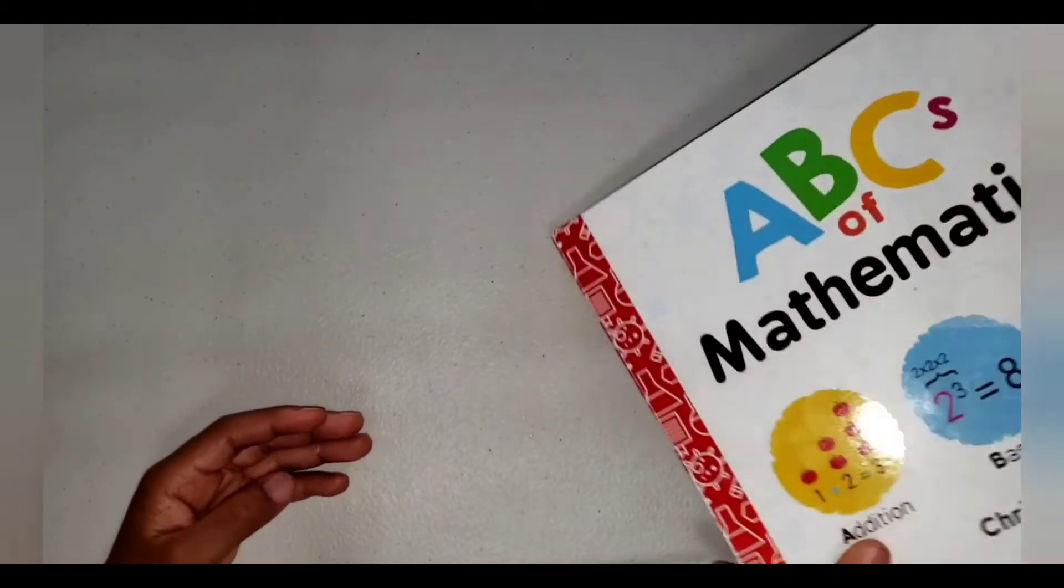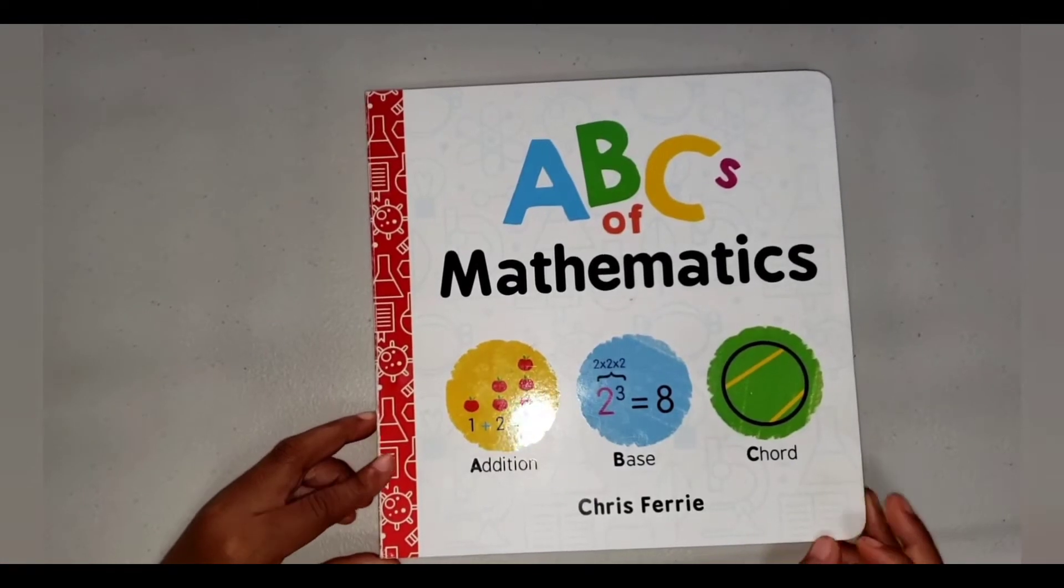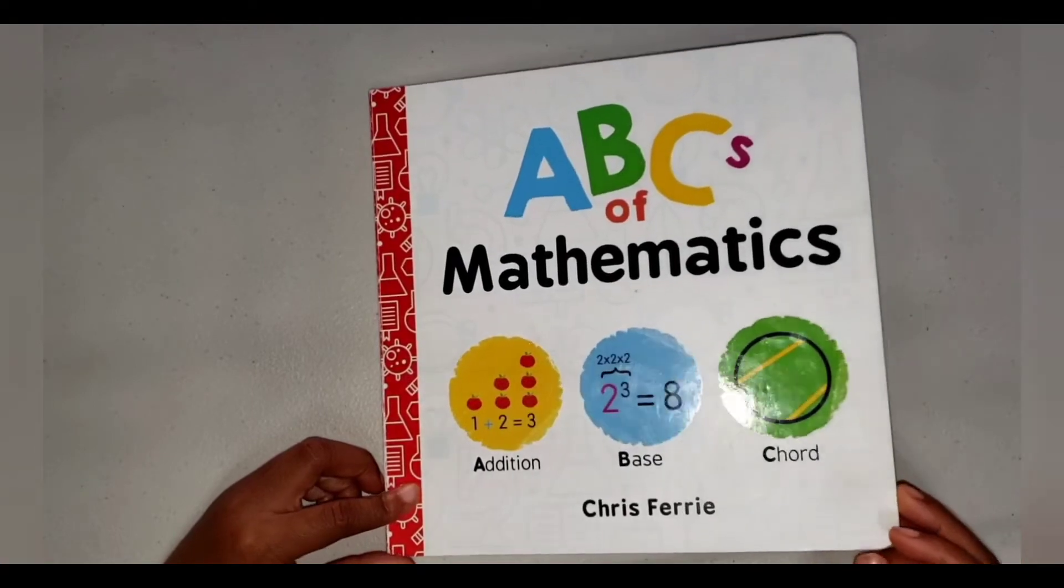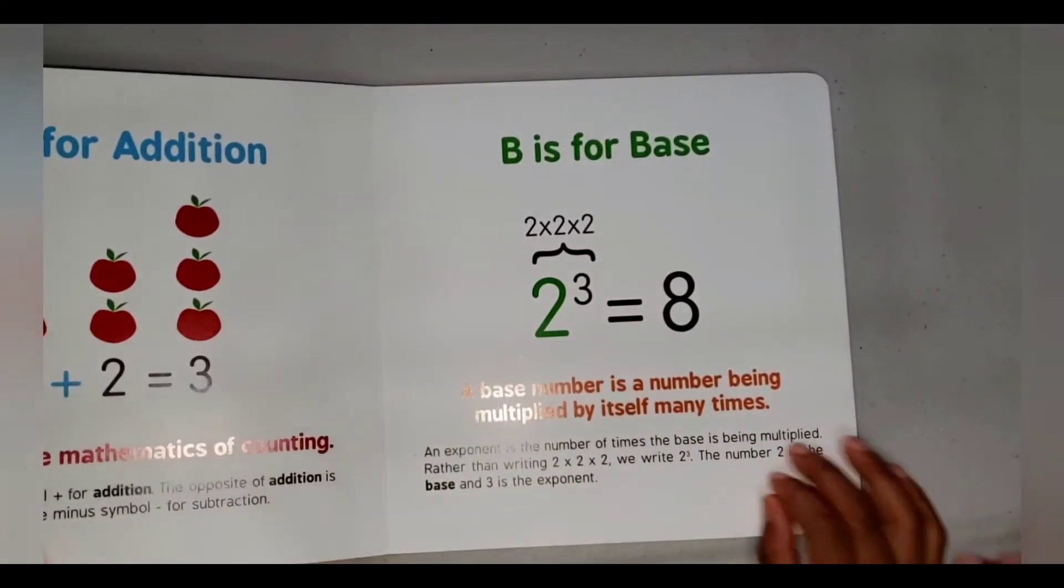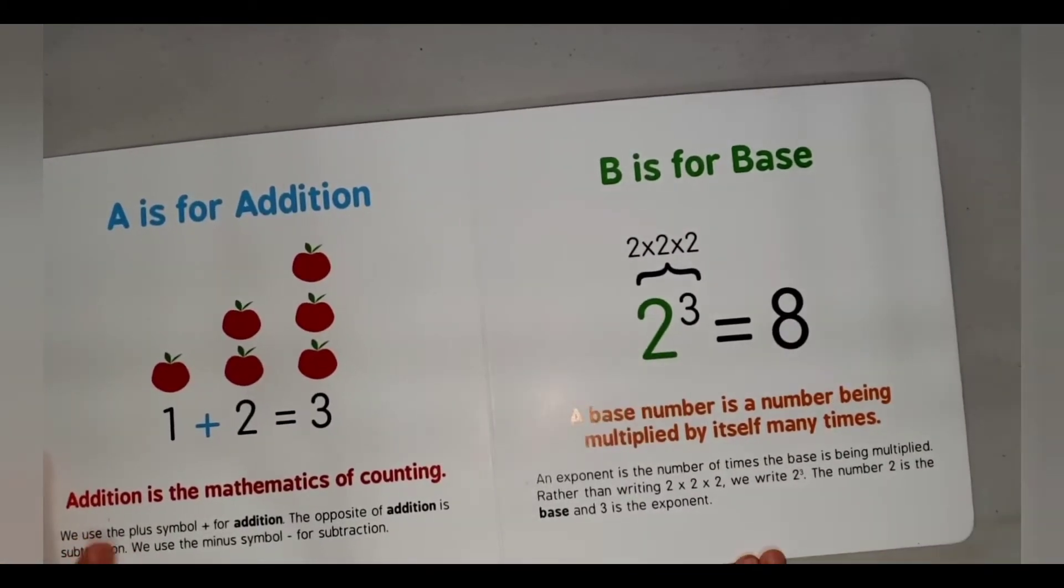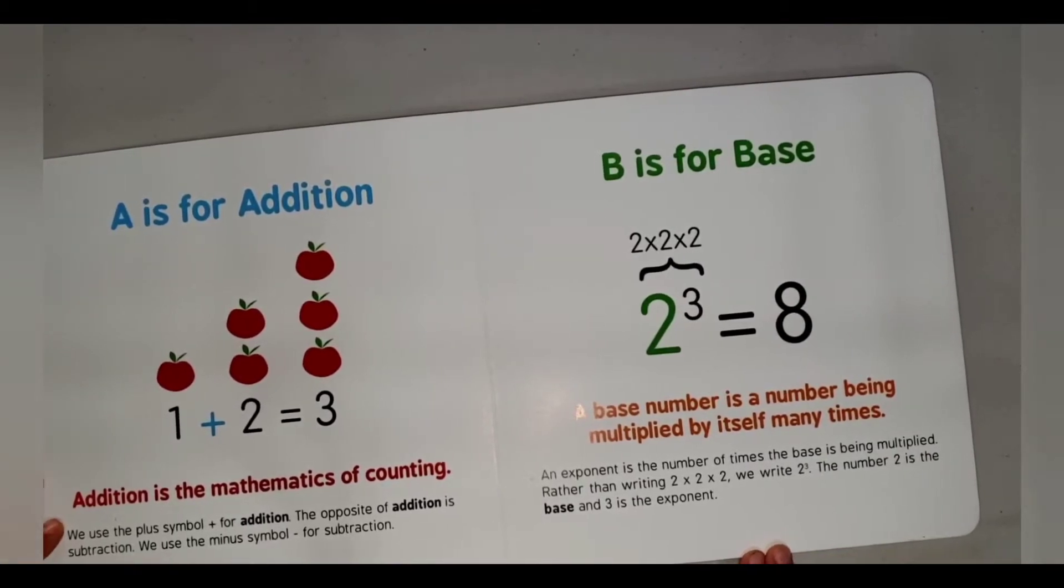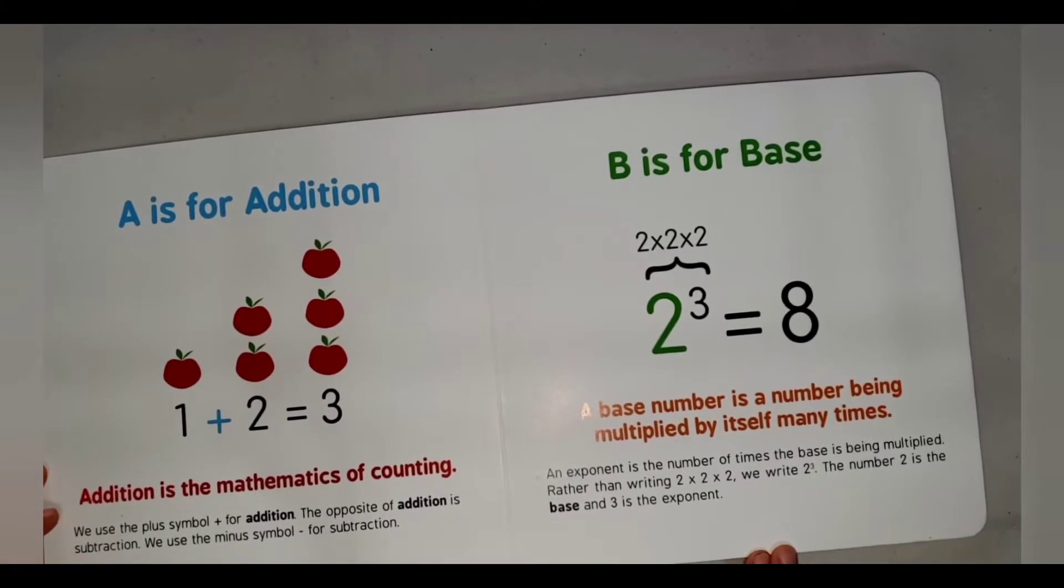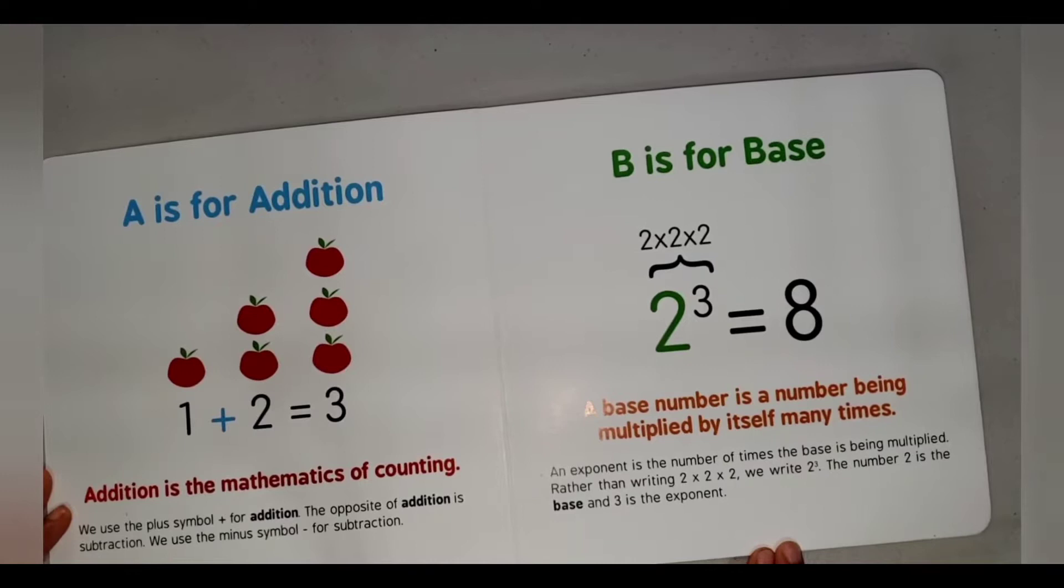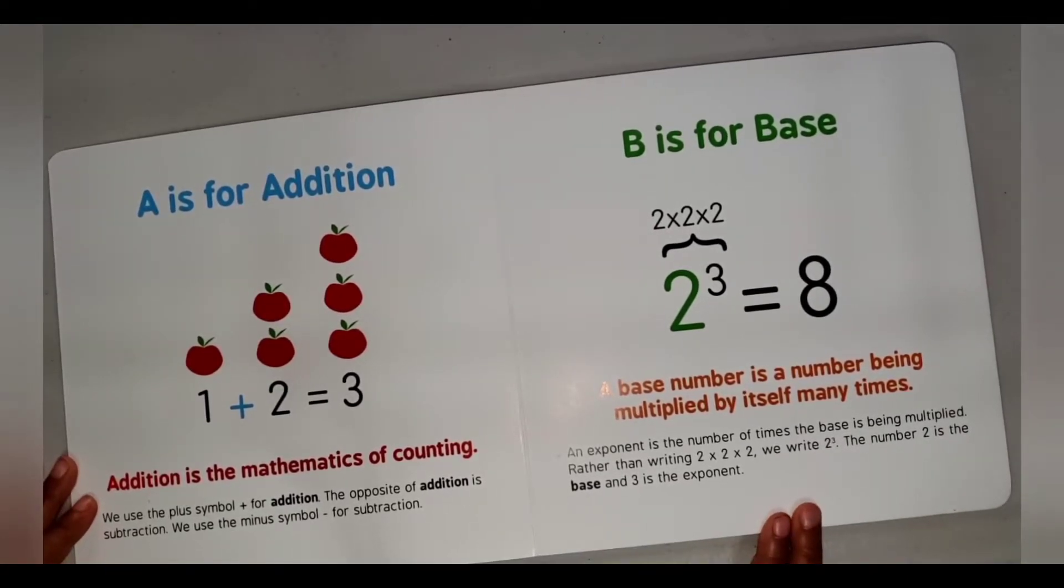It's cool, right? So, The ABCs of Mathematics by Chris Barry. A is for Addition. Addition is the mathematics of counting. We use the plus symbol for addition. The opposite of addition is subtraction. We use the minus symbol for subtraction.